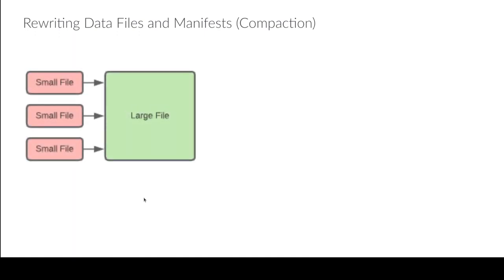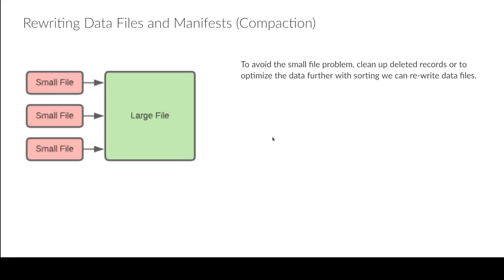Next is rewriting data files and manifests — compaction. If you're taking in streaming data or doing a lot of merge-on-read updates and deletes, you're going to start accumulating a lot of small files and delete files. The more small files, the more files the engine has to open, read, and close, which slows down the whole scan process. So instead of many small files, you want fewer large files. That's what compaction does — take a bunch of smaller files and combine them into bigger files, avoiding the small file problem.